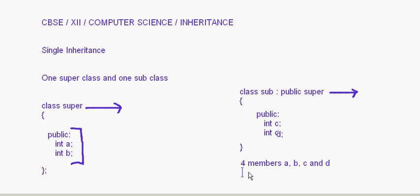The subclass can also access a and b which are in the super class. This is the syntax for inheritance: write the derived class name, then a colon, then the super class name. Here we have written 'public super'.